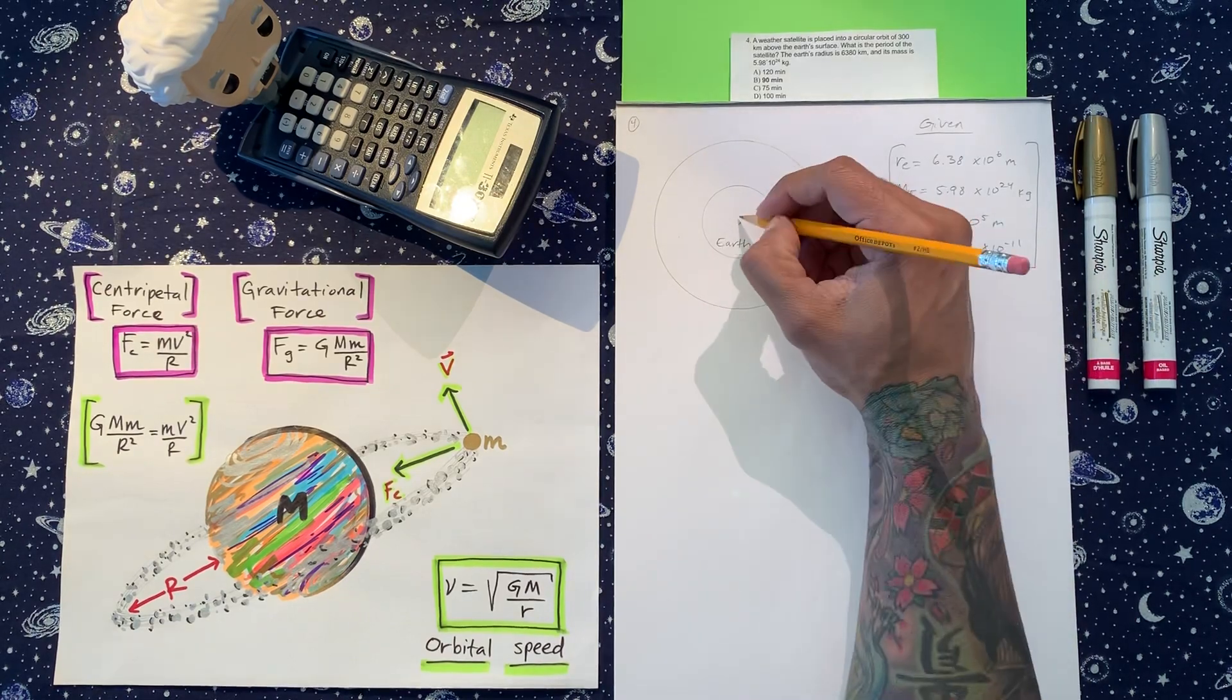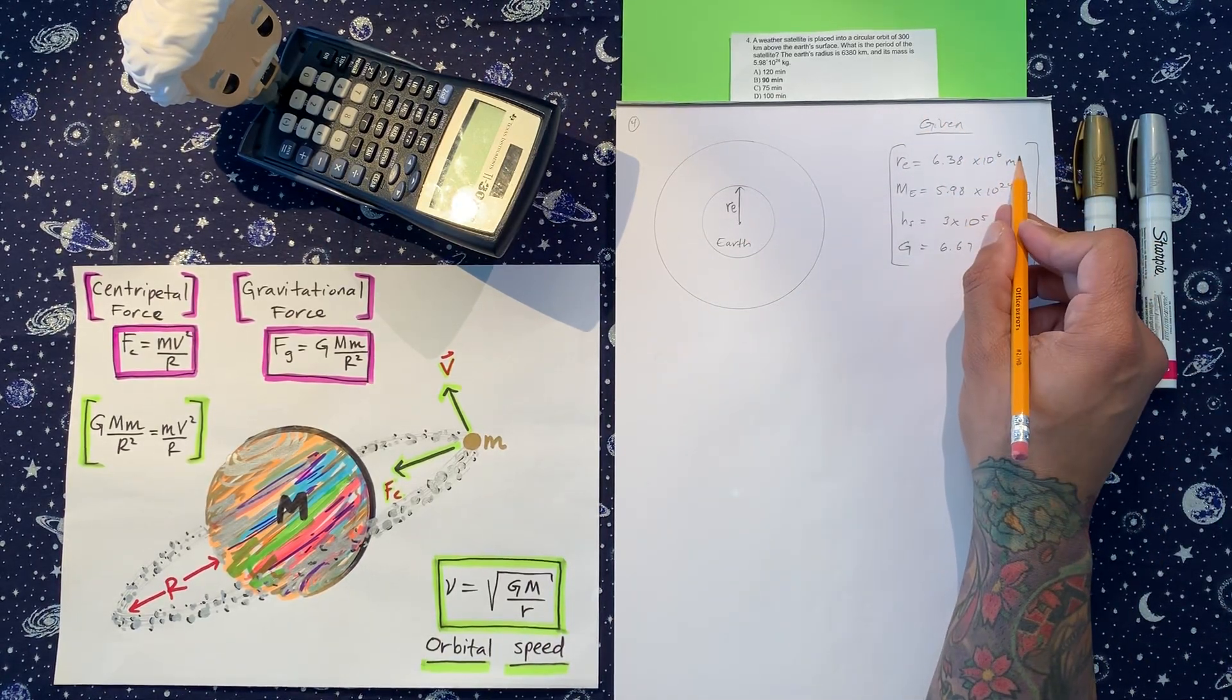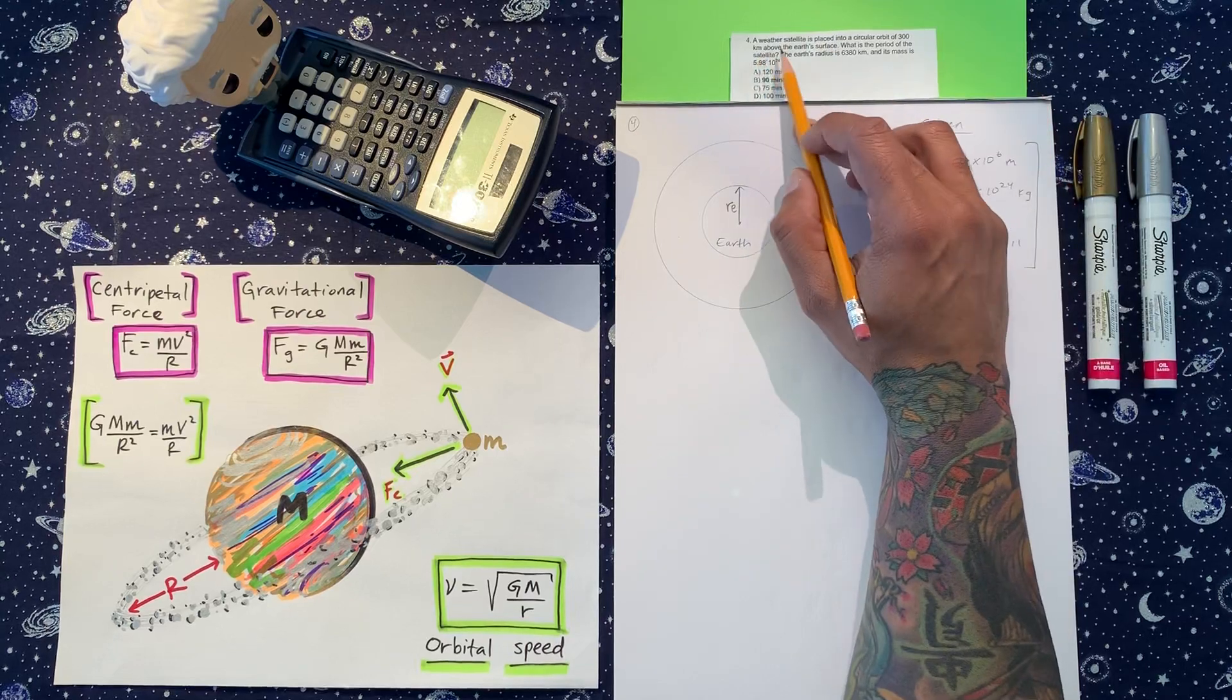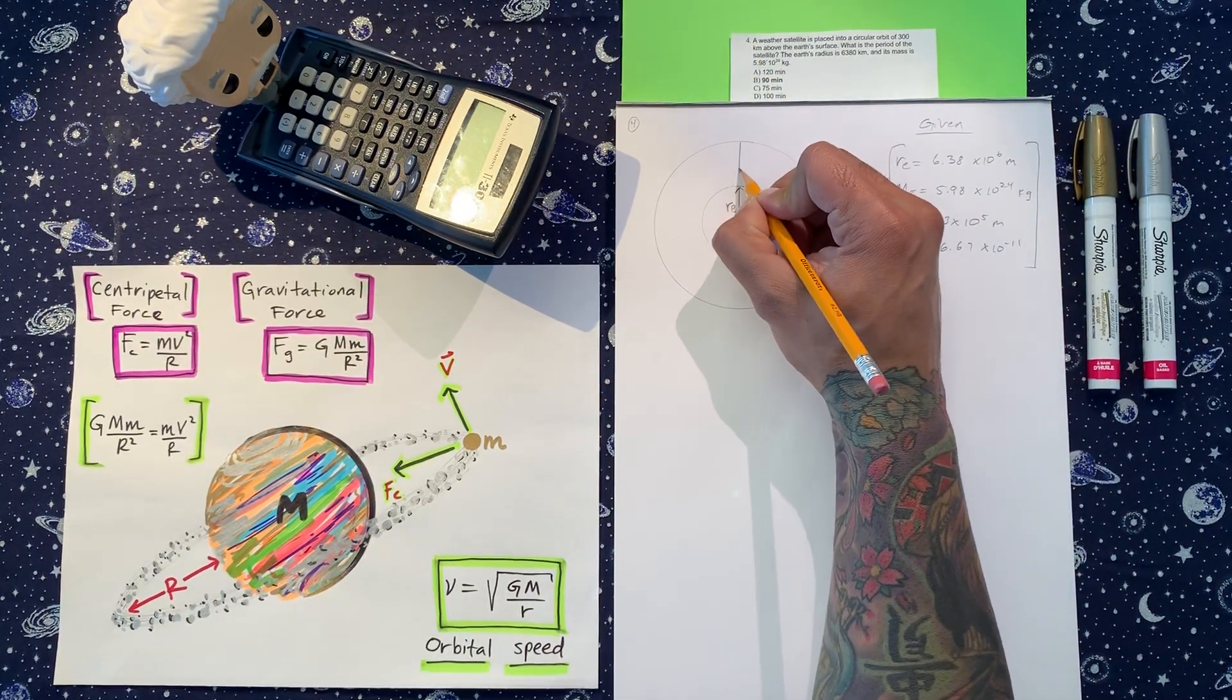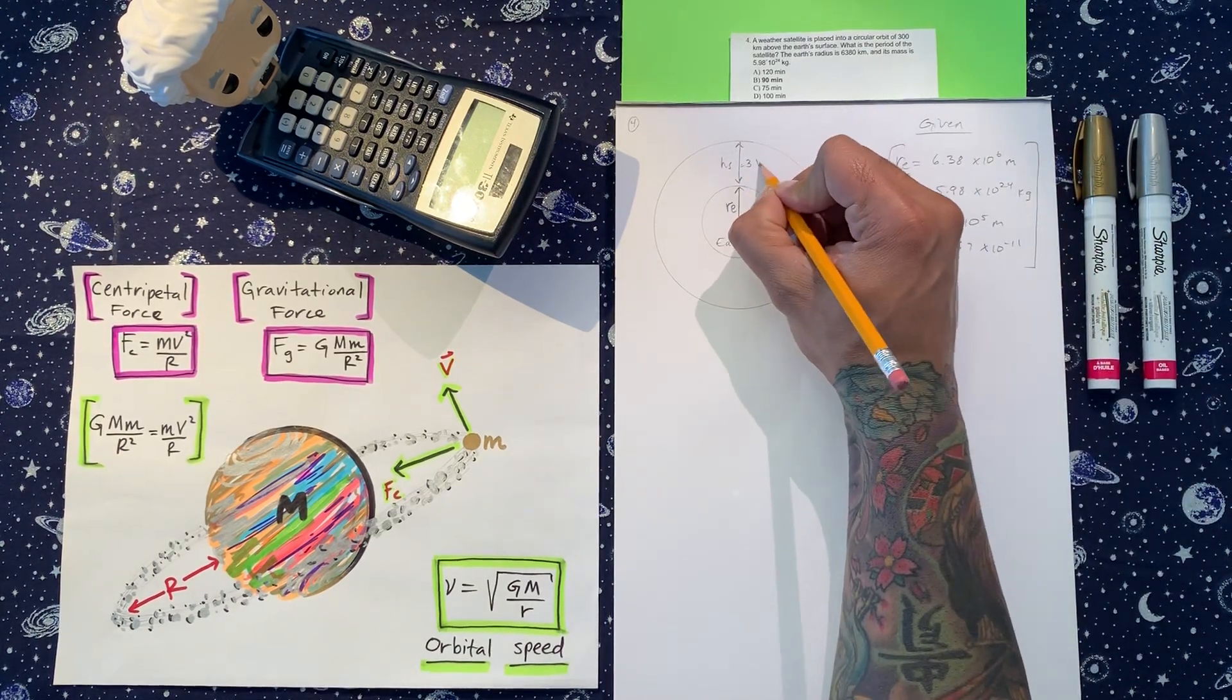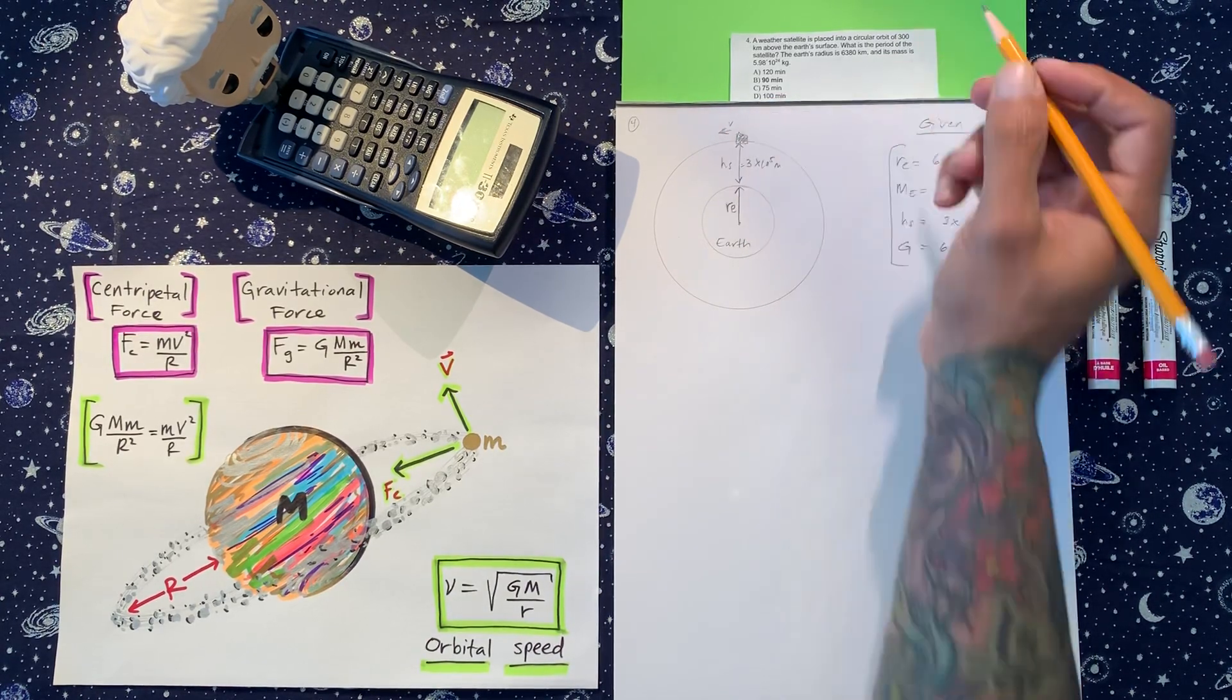Okay, so this in here is the Earth. This is the radius of the Earth. And then we have the height of the satellite, so the weather satellite is placed into circular orbit, 300 kilometers above the Earth, so we convert that, and then this in here is the height of the satellite, which is equal to three times 10 to the fifth meters. This box here will be the satellite moving in circular motion.